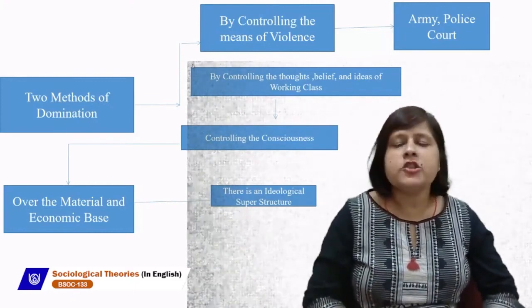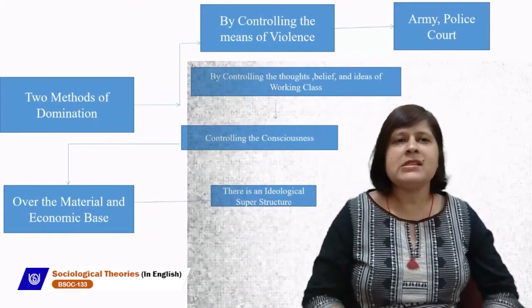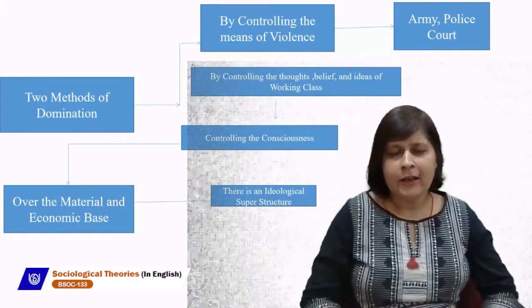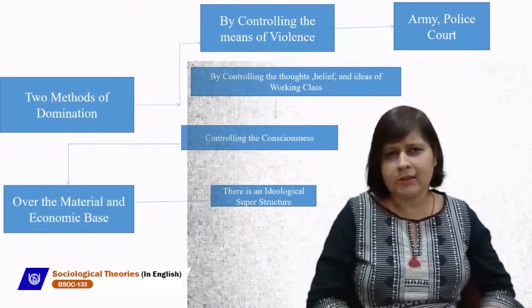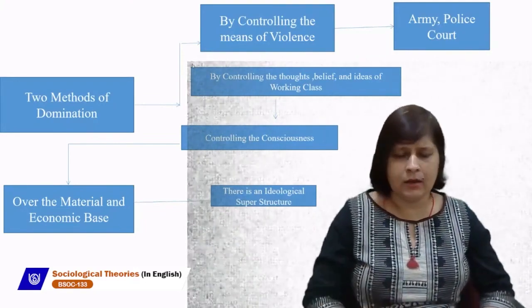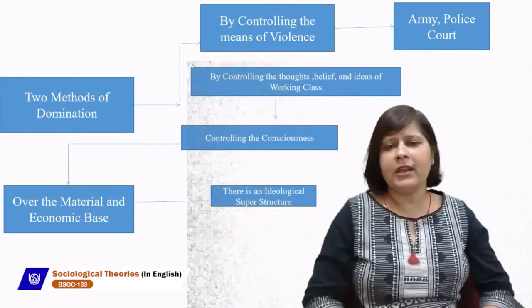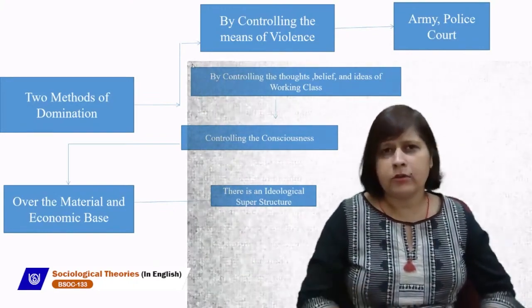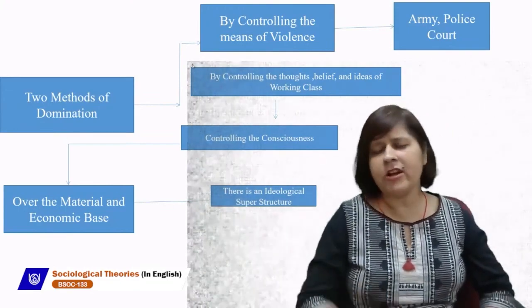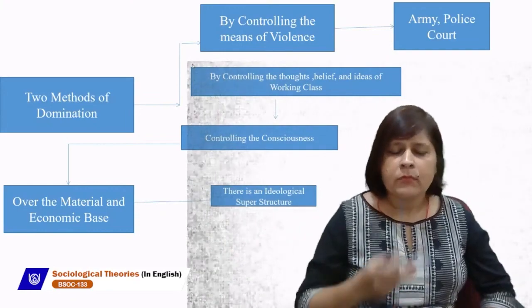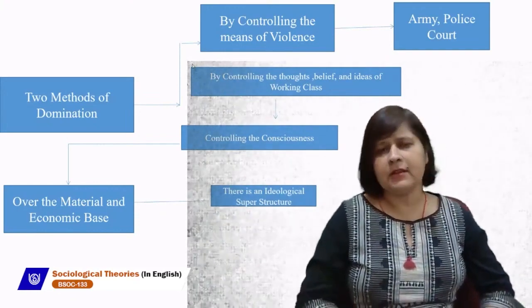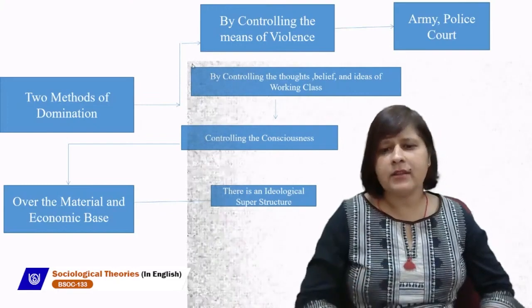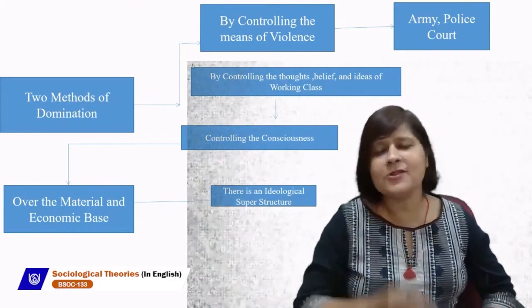The first method of domination is by controlling means of violence — through army, police, court. The dominant class tries to control the dominated class by using means of violence. But according to Marx, this is a short-term method of control. You cannot control anyone for a longer duration by means of violence. The second method, which is responsible for longer duration of control, is by controlling the thoughts, beliefs, and ideas of the working class.